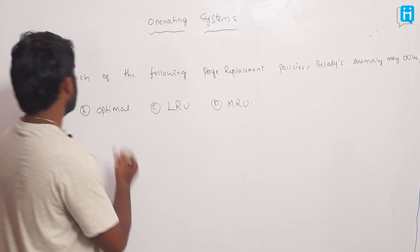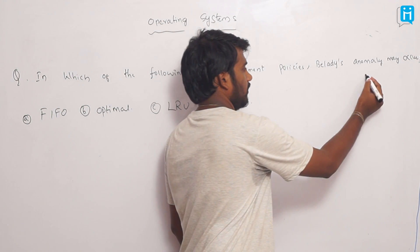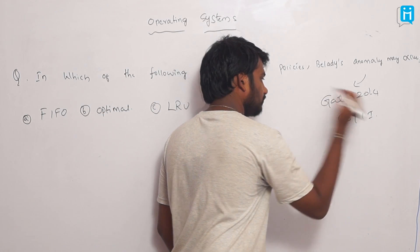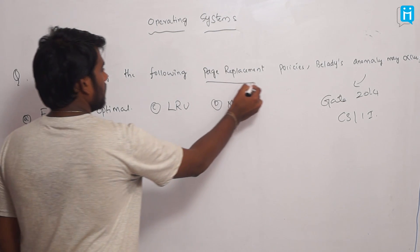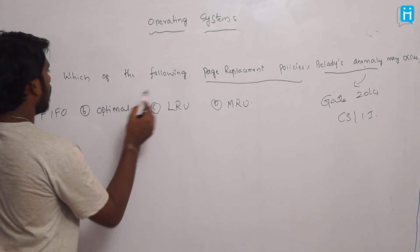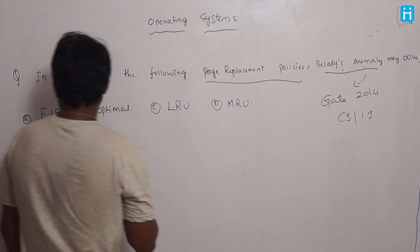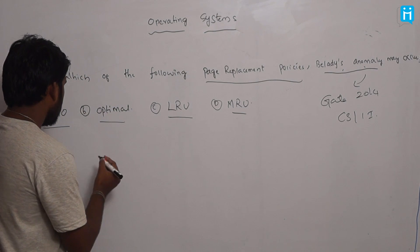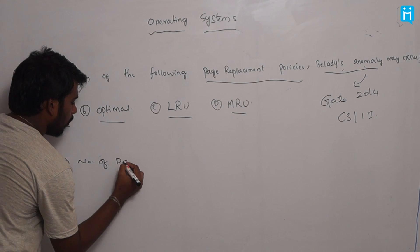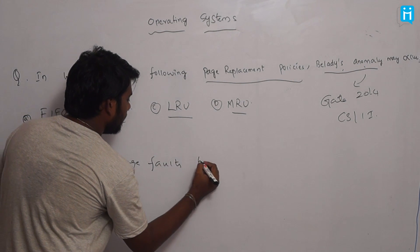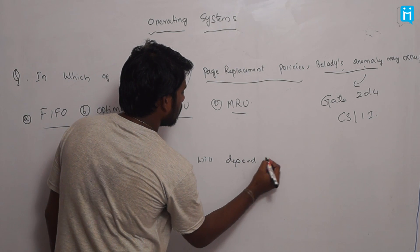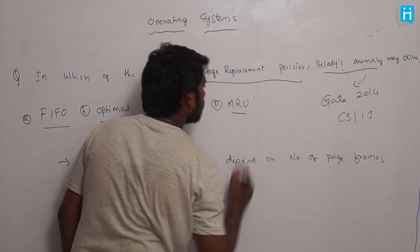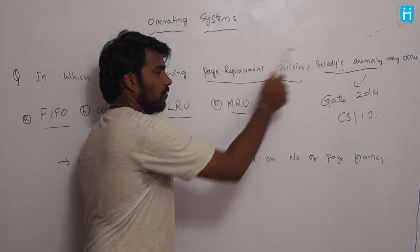Our next question in operating systems: in which of the following page replacement policies may Belady's anomaly occur? This question is asked in GATE 2014 Computer Science and IT. The options are: First In First Out, Optimal, LRU, and MRU. When talking about page replacement policy, the number of page faults depends on the number of page frames.